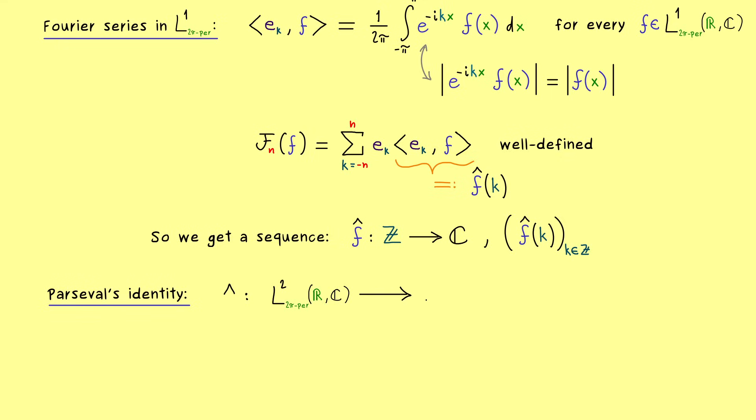And these are the so-called square summable sequences denoted by lowercase l2. So not so complicated, a sequence lies in that space if the index is ℤ. And you can take each entry in the absolute value squared and sum it up and still get a finite number out. And indeed this is what we already know by Parseval's identity. It tells us that the coefficients in the Fourier series are square summable.